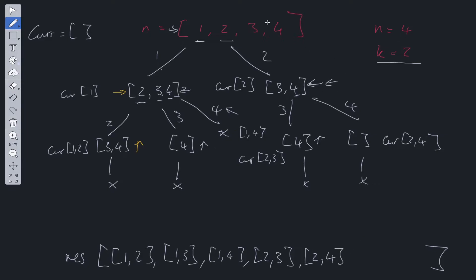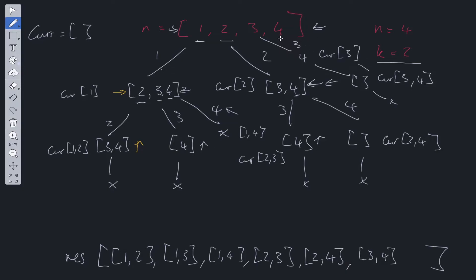We go back and take 3, with only 4 left. Current at this level is [3]. We take 4, current becomes [3, 4]. We can't go further, so we backtrack after adding [3, 4] to the array. We check 4 alone — there's nothing after it, and it won't give us a valid combination of length 2 where k equals 2. So we return the result.